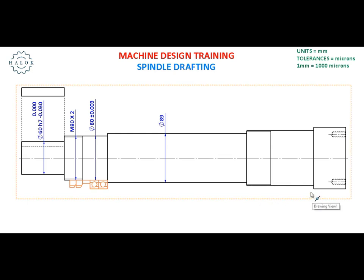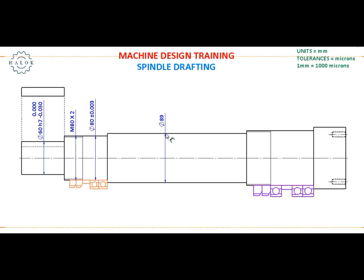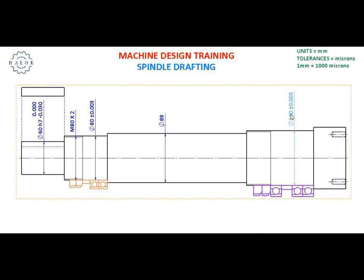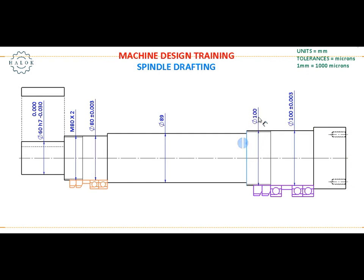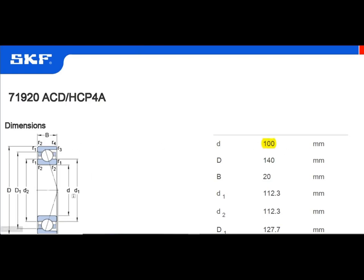Coming to the next portion of the spindle, this area is also going to carry a bearing arrangement. You can see a triplet arrangement — two bearings, a spacer in between, another bearing, and two lock nuts to lock these bearings with a certain amount of preload. Dimensioning this area, let us assume we are using a 100 mm ID angular contact ball bearing. I am going to give a very close tolerance of plus or minus 3 microns since it is a bearing-carrying face. For the threaded portion we are going to use an M100 by 2 standard lock nut, so I have generated an M100 thread here. The step diameter at this location is selected as 112 mm, which is more than the OD of the bearing inner race.